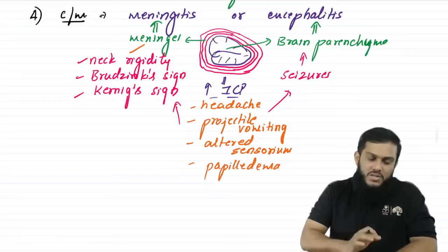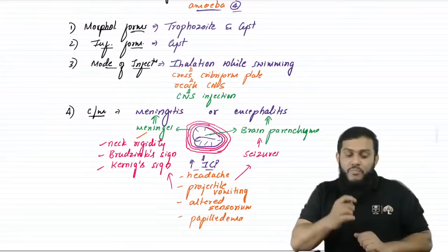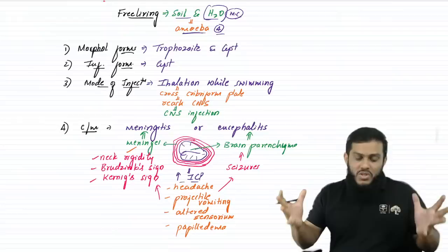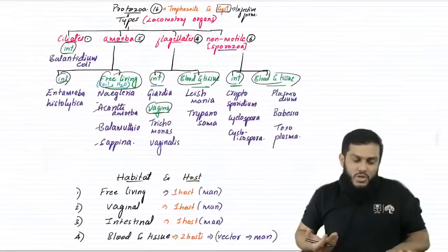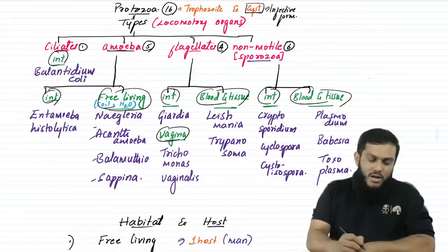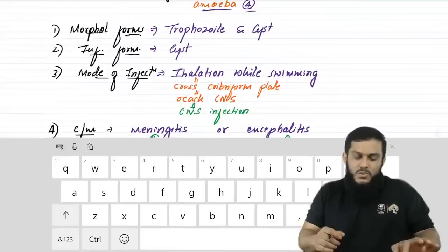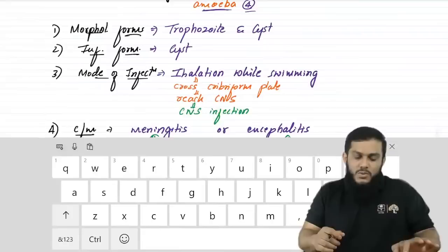Balamuthia also causes GAE — granulomatous amoebic encephalitis — a chronic disease, but it cannot cause contact lens keratitis. Sappinia causes just encephalitis (E) — also chronic, but without granuloma formation. So: Naegleria → PAM (acute, meningoencephalitis); Acanthamoeba → GAE + contact lens keratitis (chronic); Balamuthia → GAE (chronic); Sappinia → encephalitis (chronic). Only Naegleria causes meningitis; the remaining three cause only encephalitis.